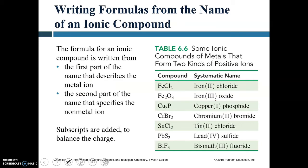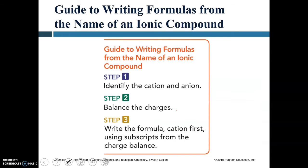More examples: if chloride gives -2 total, iron is +2 — iron(II) chloride. If oxygen gives -6 total (three O²⁻), iron must be +3 — iron(III) oxide. Copper(III) phosphide, and so on. The process: identify cation and anion, balance the charges, then write the formula from the name.